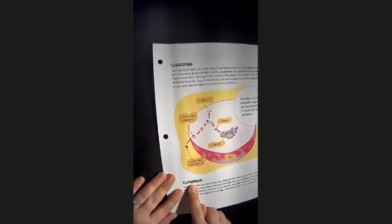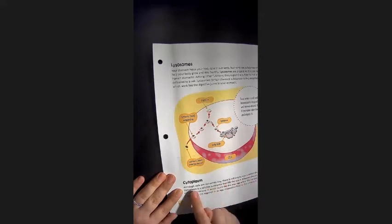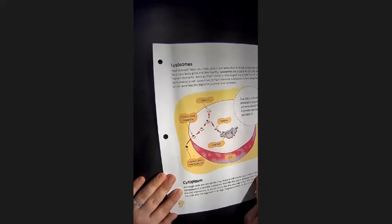Cytoplasm. Although cells are extremely tiny, there is still empty space within the cell. Cytoplasm is a jelly-like substance that fills the space between the nucleus and the cell membrane. It works much like the way egg white fills the space between the yolk and the eggshell in an egg. Organelles float in the cytoplasm.